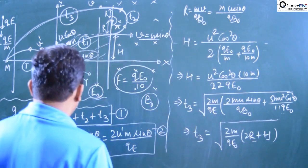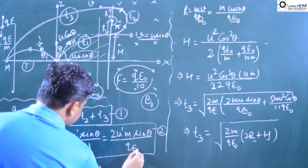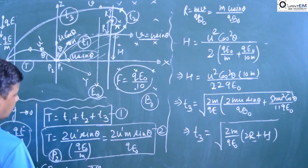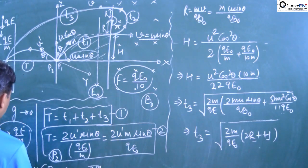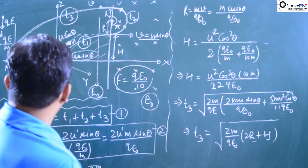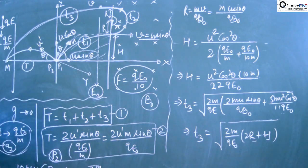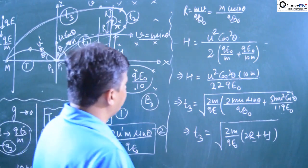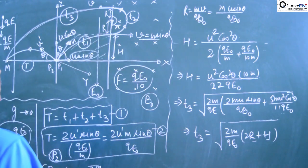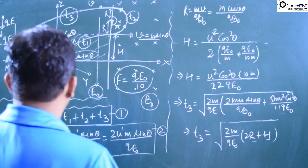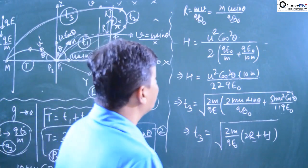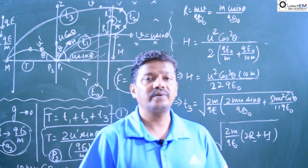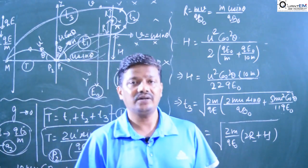Keep in mind to use E-naught and B-naught everywhere. So we have qE-naught by m in place of the acceleration. Now I have calculated t1, t2, and t3. Putting all the values in equation 1, you will get the relation between U and U-dash.